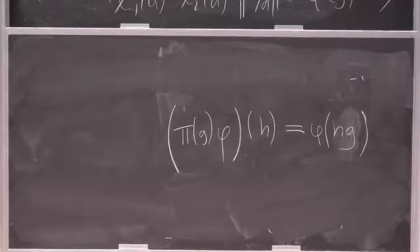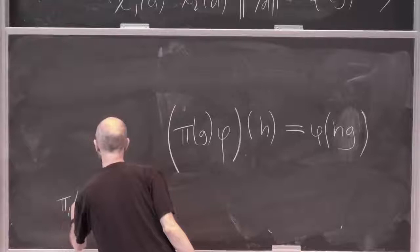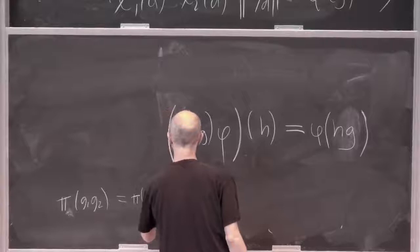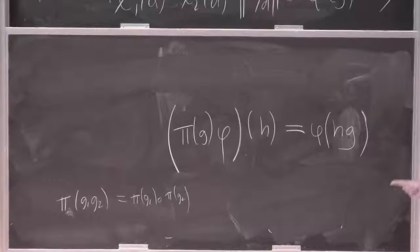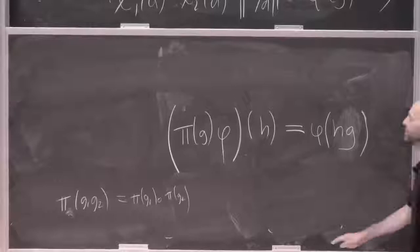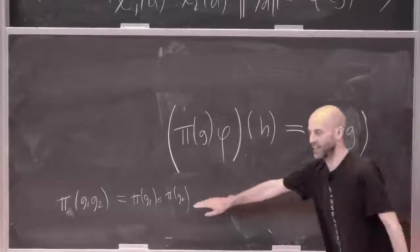So there's the thing I wrote down, and there's this implicit lemma: how do I check that π(G1·G2) equals π(G1) composed with π(G2)? I've got to check that, because if that's not true then I haven't written down a representation of my group. So let me just make the following kind of stupid observation — you know how to do that, right?